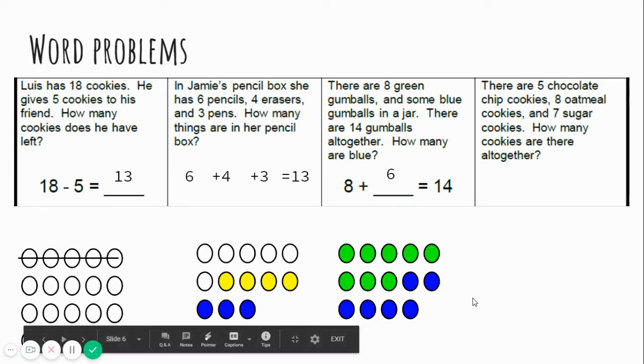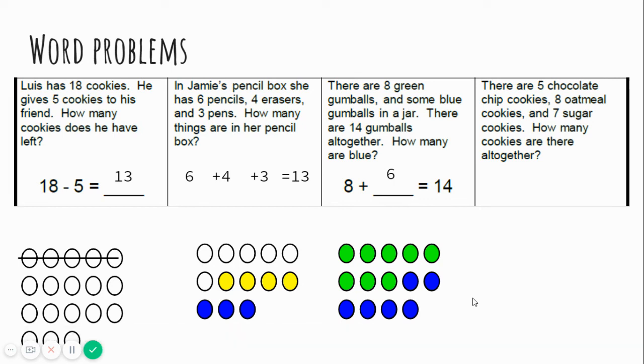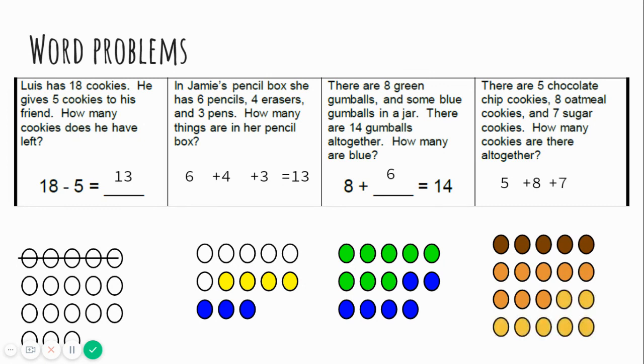Last one. There are five chocolate chip cookies, eight oatmeal cookies, and seven sugar cookies. How many cookies are there all together? There are five chocolate chip cookies. Eight oatmeal cookies, and seven sugar cookies. How many cookies are there all together? Let's count these by five. Five, ten, fifteen, twenty. There are twenty total cookies. Great job.